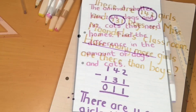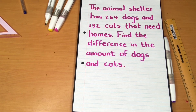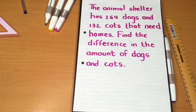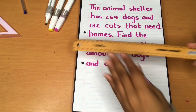Our next word problem reads: the animal shelter has 264 dogs and 132 cats that need homes. Find the difference in the amount of dogs and cats. Before we get started, we need to figure out what kind of word problem this is by finding our special word, and our special word is 'difference.'